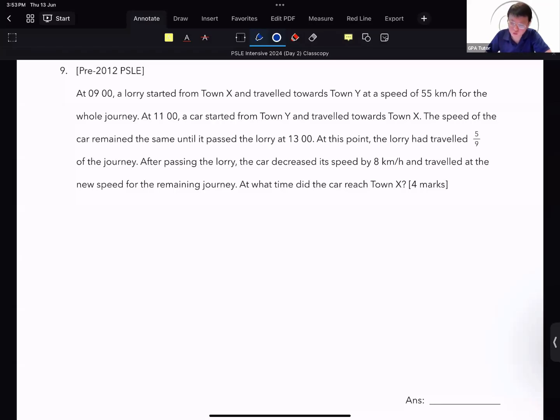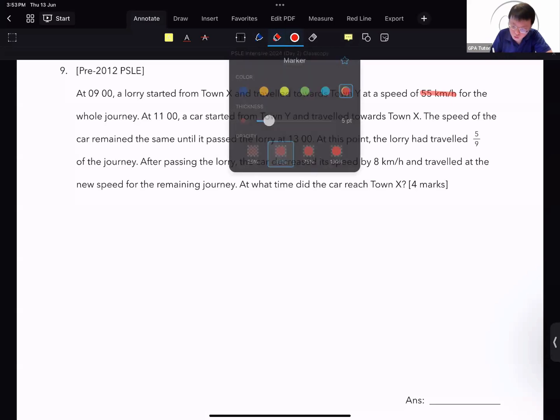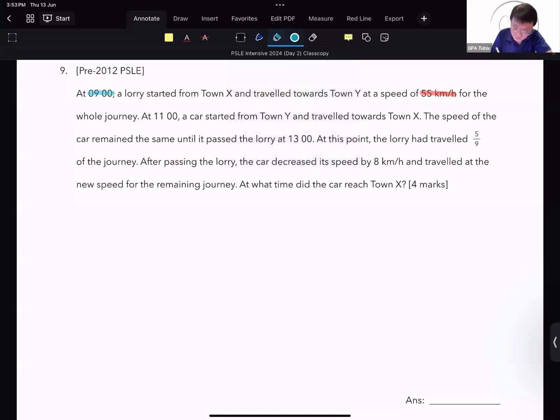At 9 o'clock, a lorry started from town X and traveled towards town Y at a speed of 55 km per hour for the whole journey. At 11 am, the car started from town Y and traveled towards town X, so it is opposite direction.